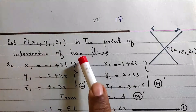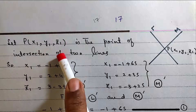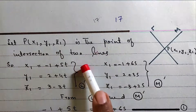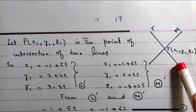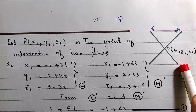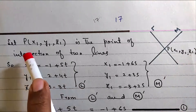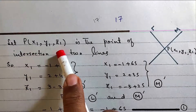Let P(x1, y1, z1) be the point of intersection of the two lines. Since both L and M pass through this point, we substitute x1, y1, z1 into both parametric equations and compare to get a system of equations in t and s.